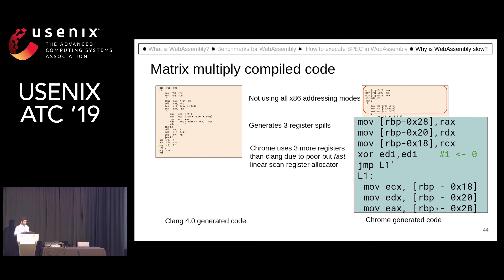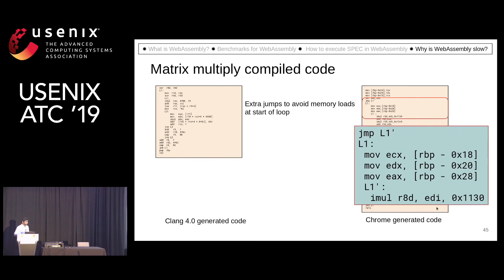This is because of its fast but unfortunately poor linear-scan register allocator, as compared to Clang's greedy register allocator. Since it is generating spills, and it knows the data is already in registers in the first iteration, it will also generate some extra loop unrolling.